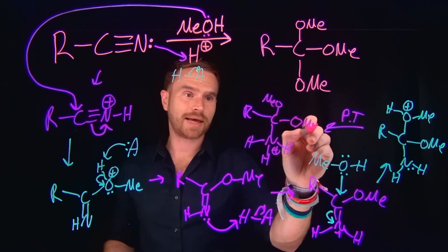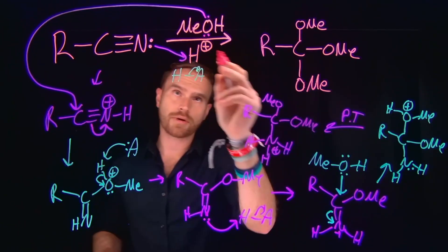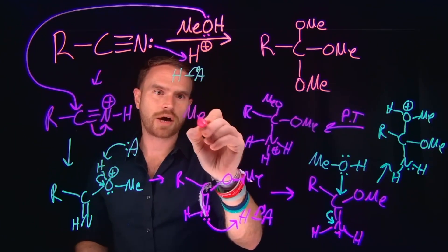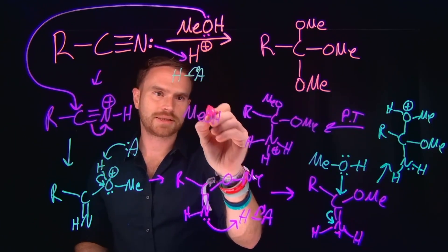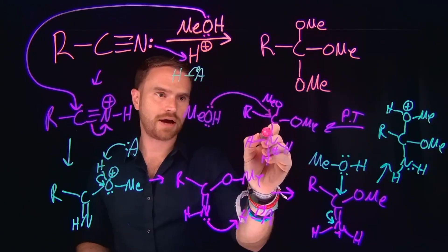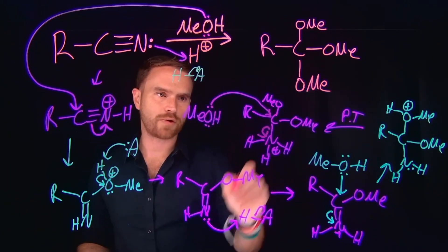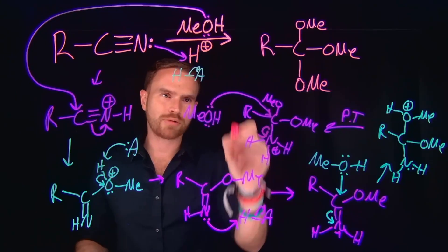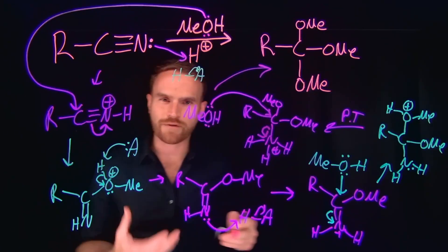And in fact, what will happen again is that this time when another methanol comes in, it will come and attack this carbon, except for also now we've generated a good leaving group. So now this ammonia can leave as a leaving group. And then following a subsequent proton transfer, that's actually how we get to our final product.